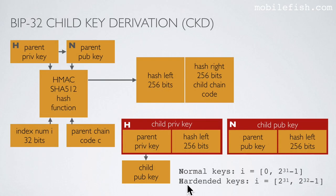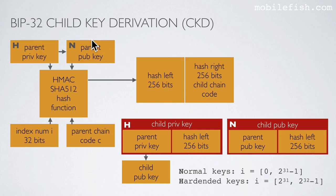In the previous slide I explained how to create hardened keys — these are the child private key and the child public key. If you want to create normal keys you use index numbers within the range 0 to 2 to the power of 31 minus 1, and you use the parent public key. Normal keys consist only of child public keys; they do not create child private keys.